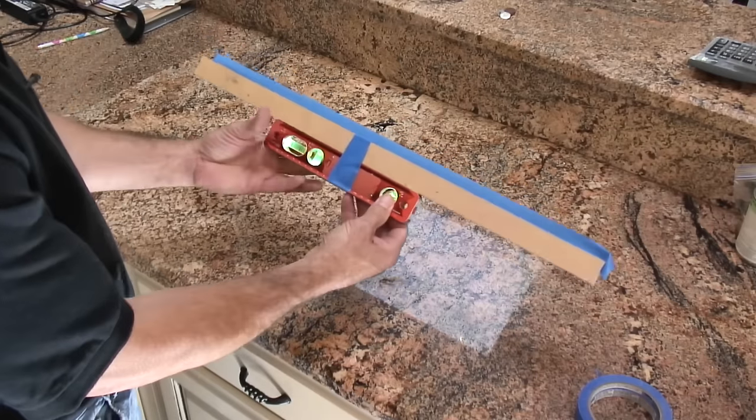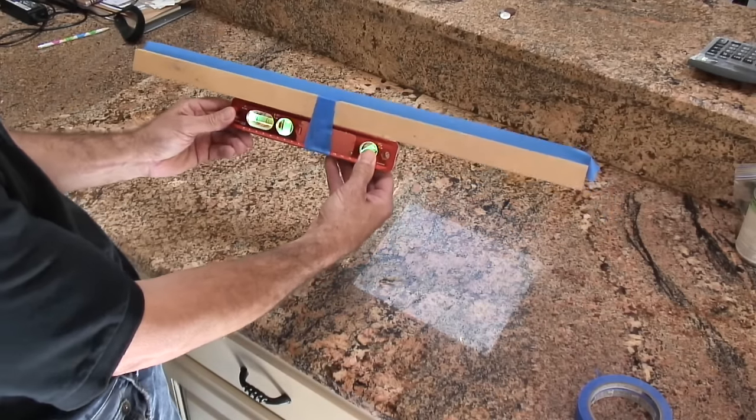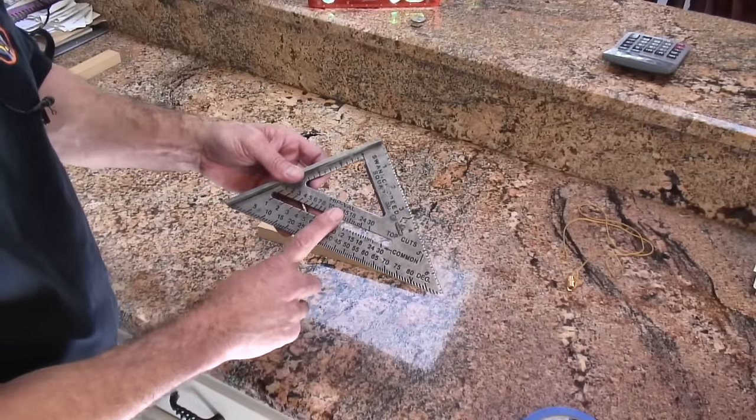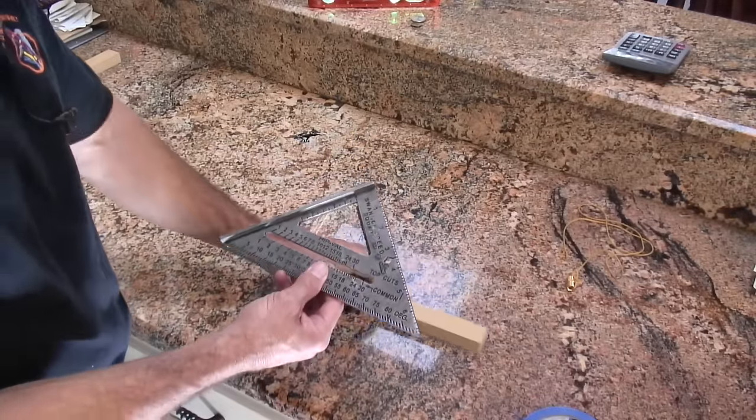You can mark it on the two sides. I have my level here, and everything's going to fall right. If you don't have a level, but you're lucky enough to have a Swanson Speed Square, you can still accomplish the same task.